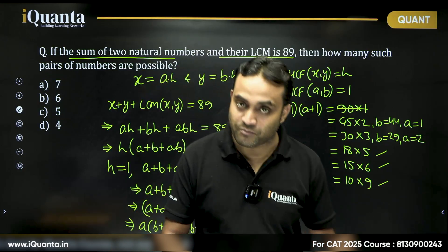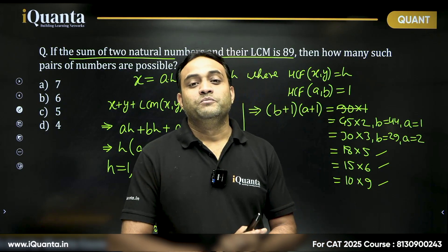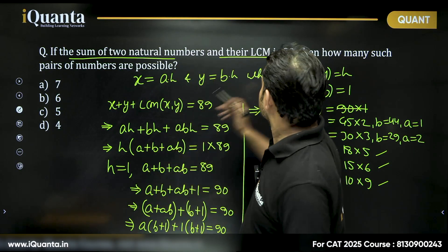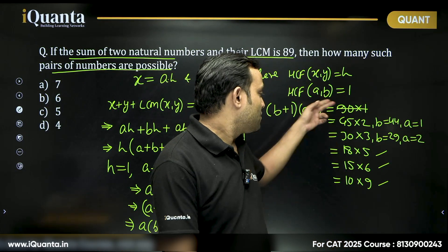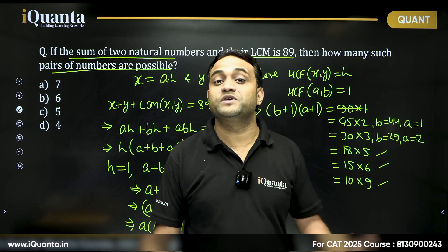We don't need to find all the numbers, because we need to find how many such pairs of numbers are possible. So how many pairs? 1, 2, 3, 4, 5 such pairs are possible.